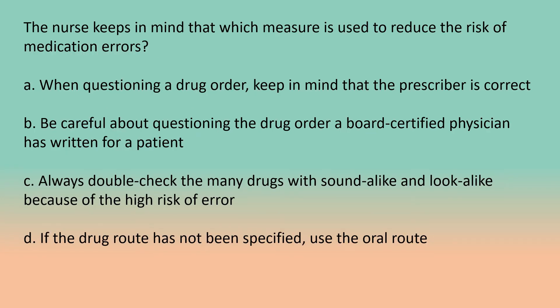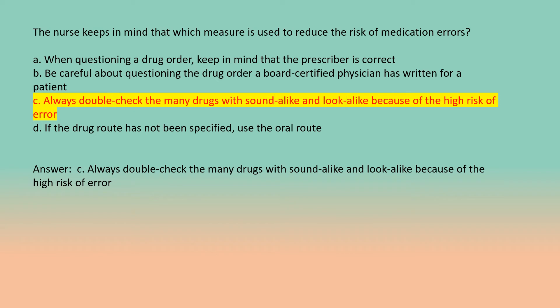The nurse keeps in mind that which measure is used to reduce the risk of medication errors? A. When questioning a drug order, keep in mind that the prescriber is correct. B. Be careful about questioning the drug order a board-certified physician has written. C. Always double-check the many drugs with sound-alike and look-alike names because of the high risk of error. D. If the drug route has not been specified, use the oral route. Answer: C. Always double-check the many drugs with sound-alike and look-alike names because of the high risk of error.